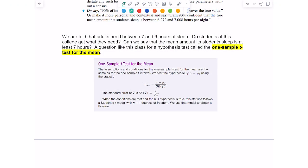We're going to look at how to do a one sample t-test for the mean. Here we're going to be looking at a hypothesis test for the mean. Recall in the problem that you should have just done, the 90% confidence interval, that adults need between seven and nine hours of sleep. Do students at this college get what they need? Can we say that the mean amount its students sleep is at least seven hours? A question like this calls for a hypothesis test, and that test is called a one sample t-test for the mean.